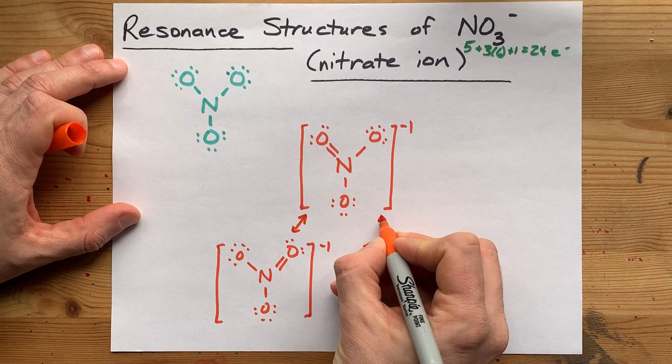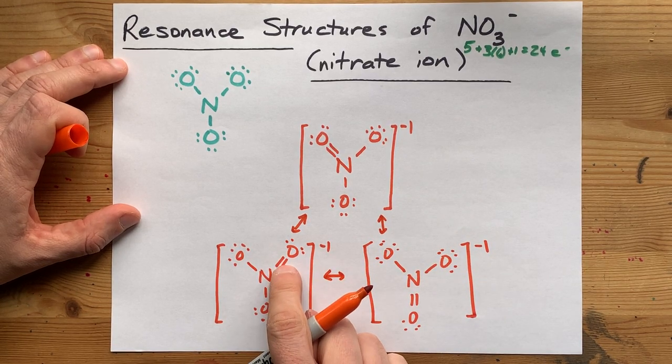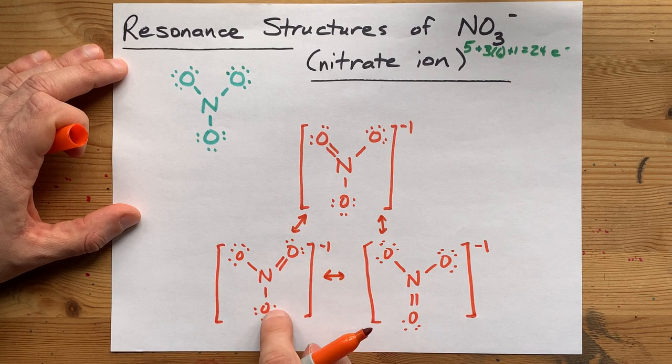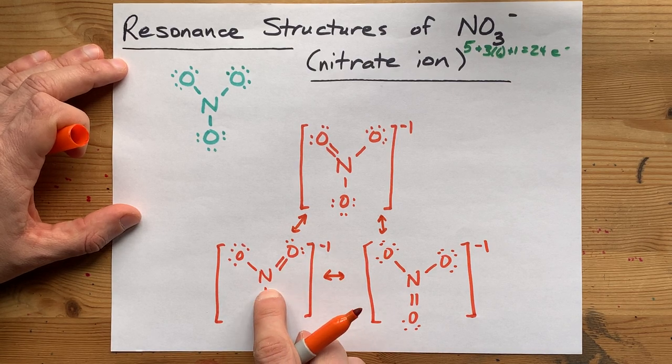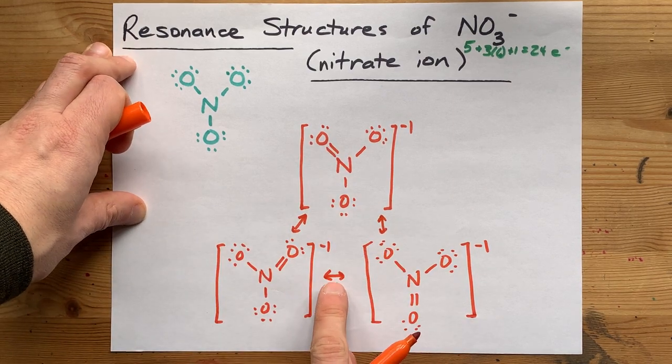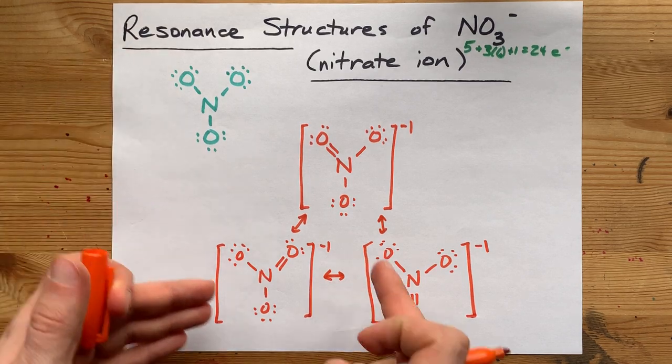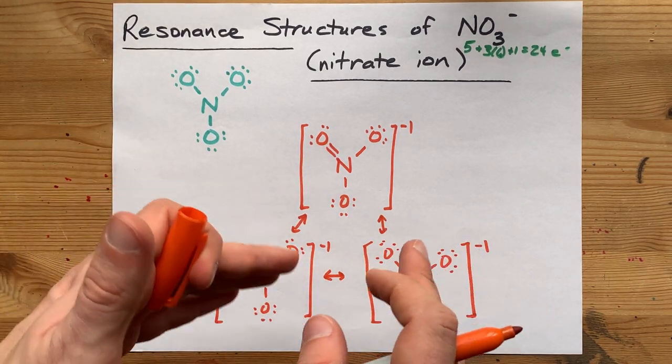And you can imagine maybe them interconverting. If this electron pair went back to the oxygen, you'd need to drag this electron pair back in to make a double bond there, et cetera, using this symbol, a double-headed arrow to show that they are resonance structures of each other.